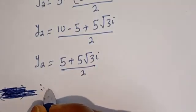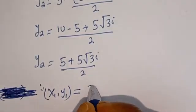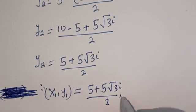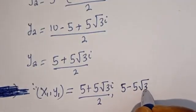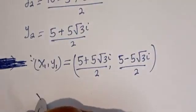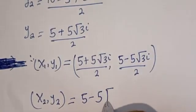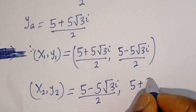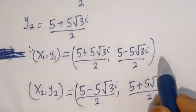Therefore, our final answers are: (x1, y1) equals (5 plus 5i√3 divided by 2, 5 minus 5i√3 divided by 2), and (x2, y2) equals (5 minus 5i√3 divided by 2, 5 plus 5i√3 divided by 2). So these are the final answers.